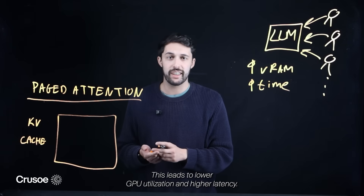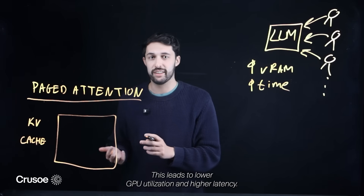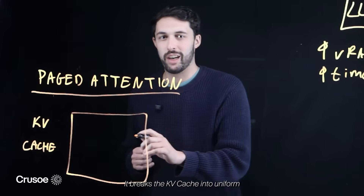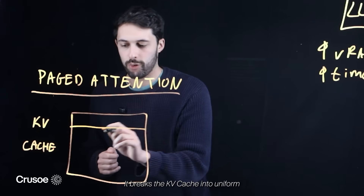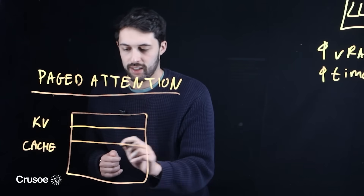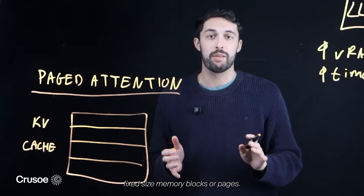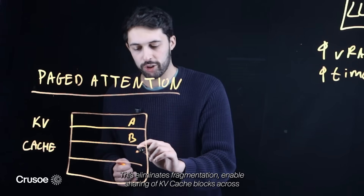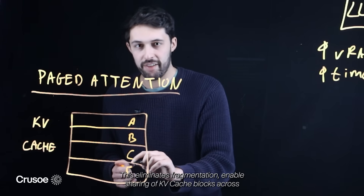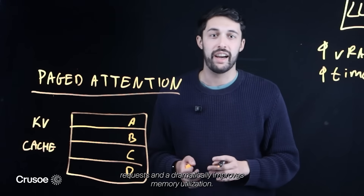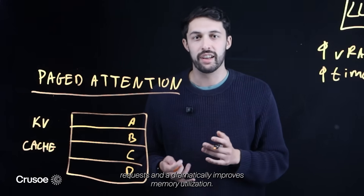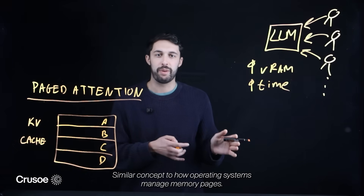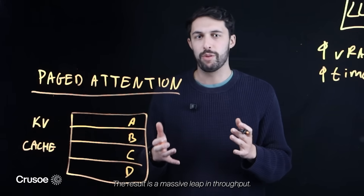This leads to lower GPU utilization and higher latency. Paged attention solves this by borrowing a trick from operating systems. It breaks the KV cache into uniform fixed-size memory blocks, or pages. This eliminates fragmentation, enables sharing of KV cache blocks across requests, and dramatically improves memory utilization — similar in concept to how operating systems manage memory pages. The result is a massive leap in throughput.